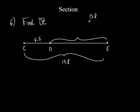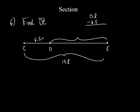So it's just 13.8 minus 6.5. It's not always going to be subtraction — they could have given you DE and asked for CE. They could have given you the value of DE and CD. What would you do if they gave you CD and DE? You would add them up to get CE.